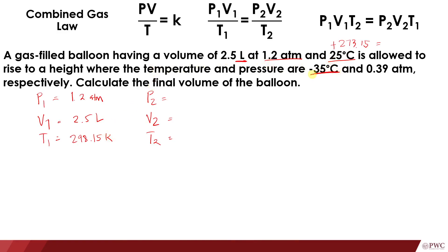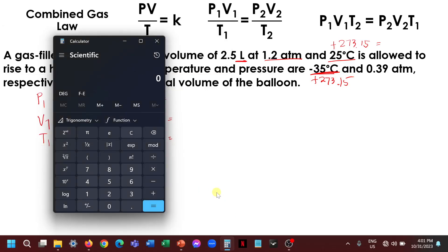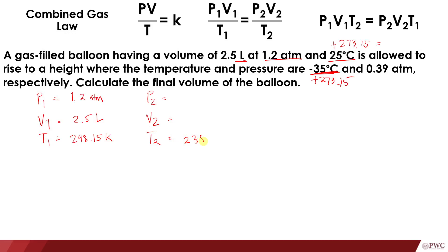For the final temperature, we have negative 35 degrees Celsius, which we convert to Kelvin: negative 35 + 273.15 = 238.15 Kelvin. The final pressure P2 = 0.39 atm.